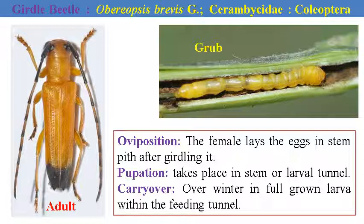Another very major collectible pest is the stem girdle beetle. The female girdles the stem by making pits both at the upper and lower side. It punctures the stem by inserting its ovipositor and deposits a single egg. Oviposition takes place in the stem or larval tunnel. Carryover stays over winter in full-grown larvae within a feeding tunnel. This can be carried over in crop material left in the field after threshing.